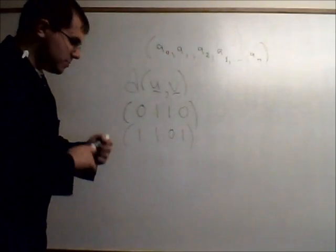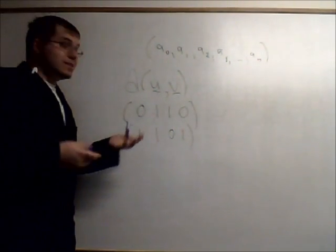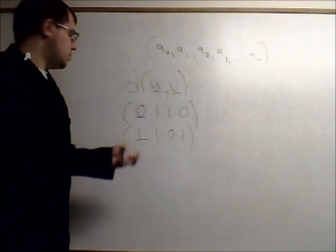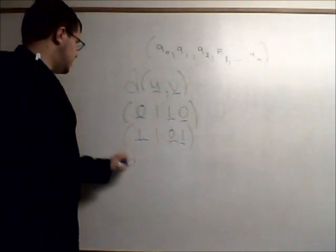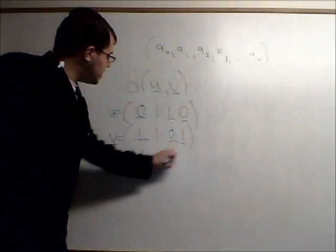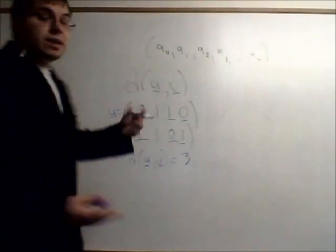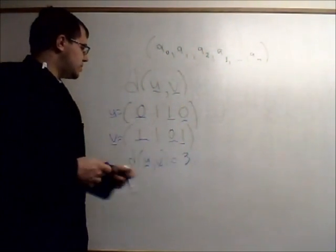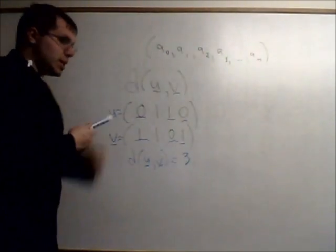How many positions here don't match? Let me get my other marker here just to make this a little bit more interesting. Where do these things agree? These guys don't match, so let's just underline all the ones that don't match. These guys match, these guys don't match, these guys don't match. So if this was U and this is V, then we say the distance of U and V is 3 because there exist three coordinate positions that don't agree.